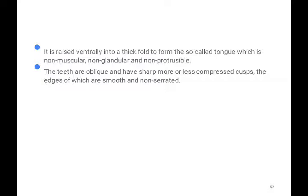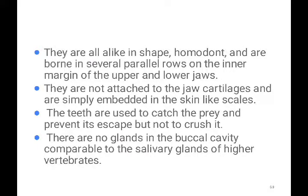The teeth are modified placoid scales and are homodont. Their teeth are sharp because the shark is highly carnivorous and a very good predator. The teeth are compressed with smooth, non-serrated edges. Unlike humans who have a single line of teeth, in sharks the teeth are arranged in several parallel rows along the inner margin of the upper and lower jaws. They are not attached to the jaw cartilage.